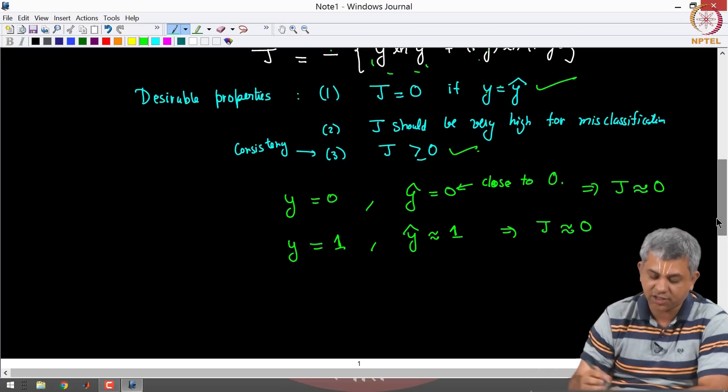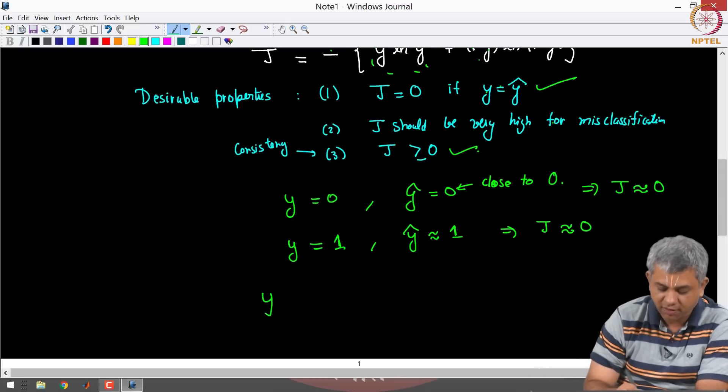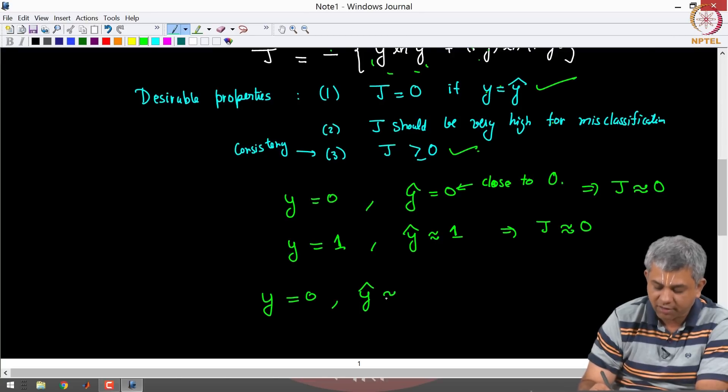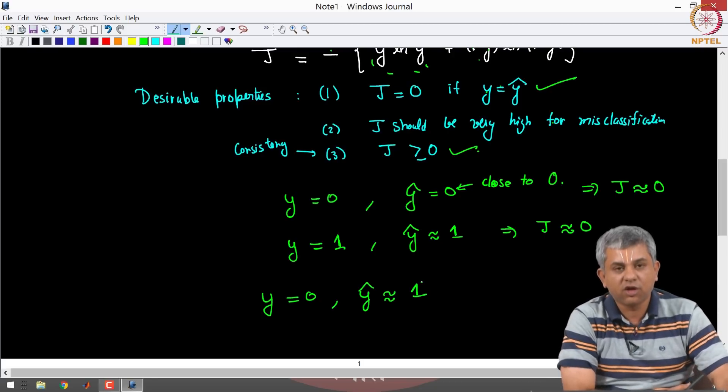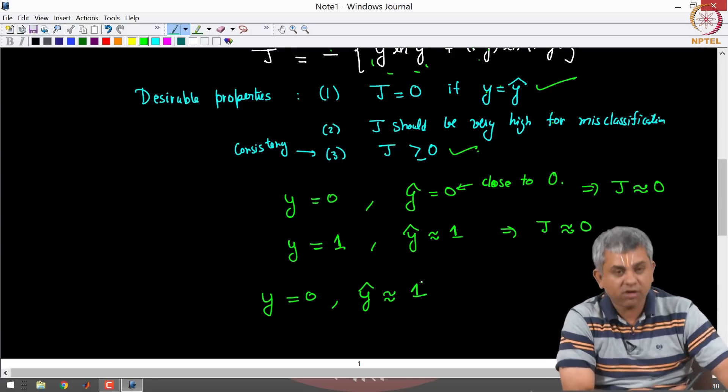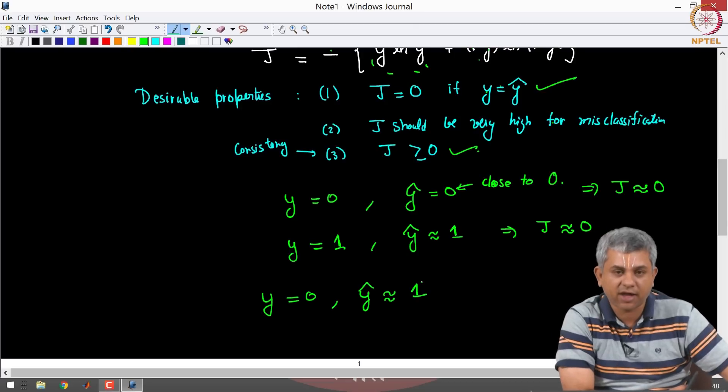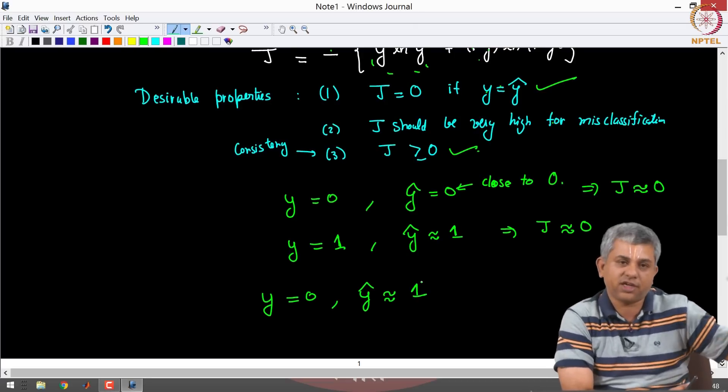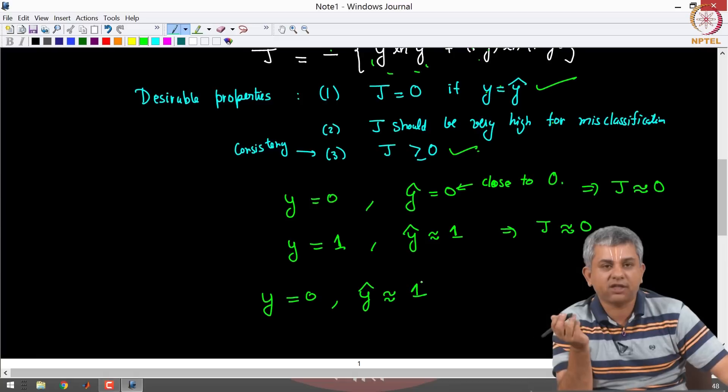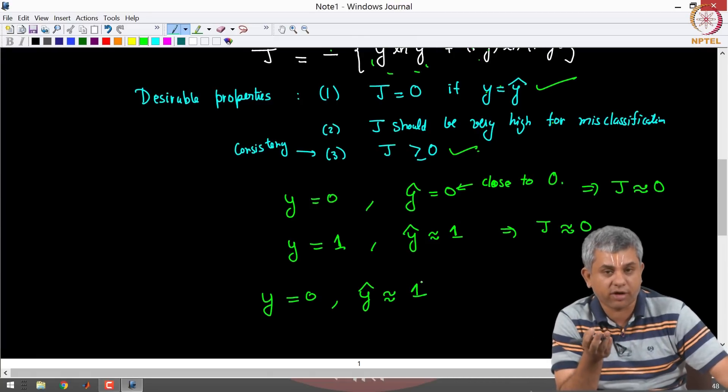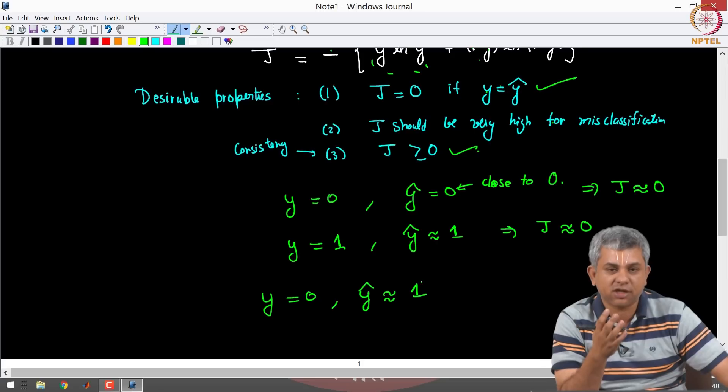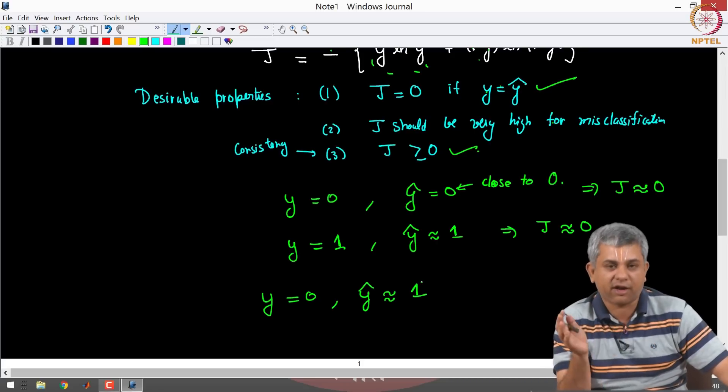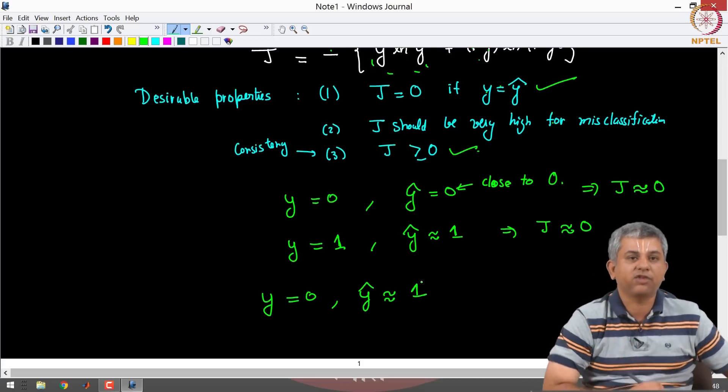So let us check that. I will check it just for one case. So let us say Y is 0 but Y hat is approximately 1, let's say 0.99 or something of that sort. So just to give you an example, suppose the person does not have cancer or the image is let's say a dog and you end up saying that this is actually not a dog and I am very very certain about it. I am certain of till like 99.99 percent that this is actually a cat. So you are actually misclassifying with high probability.